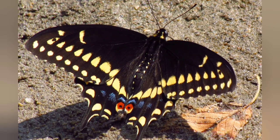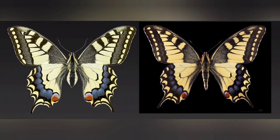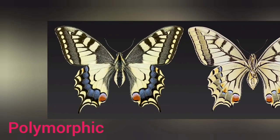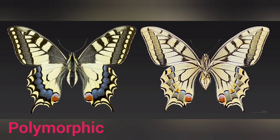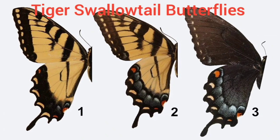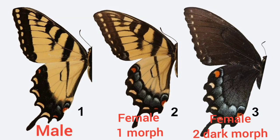In some species, one sex is mimetic; in other species, both sexes are mimetic. Also, the mimicry is monomorphic or polymorphic. For example, in the tiger swallowtail butterflies, only females are mimetic and polymorphic. The female has another dark morph.